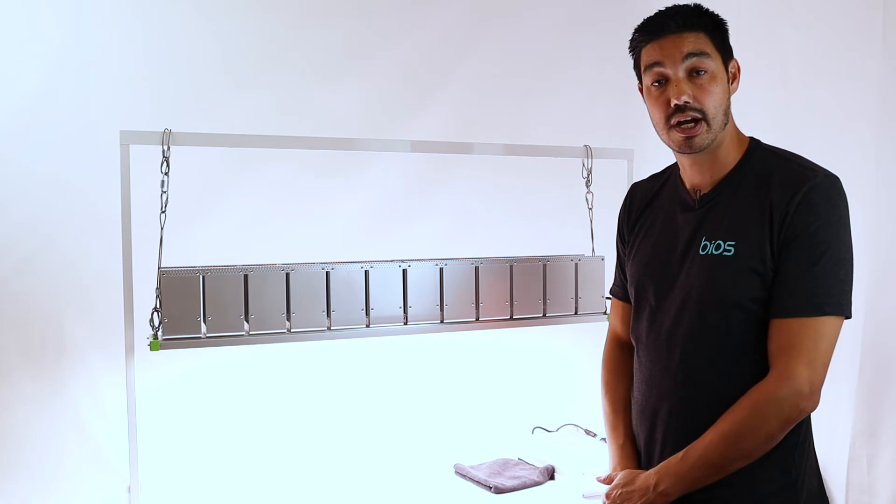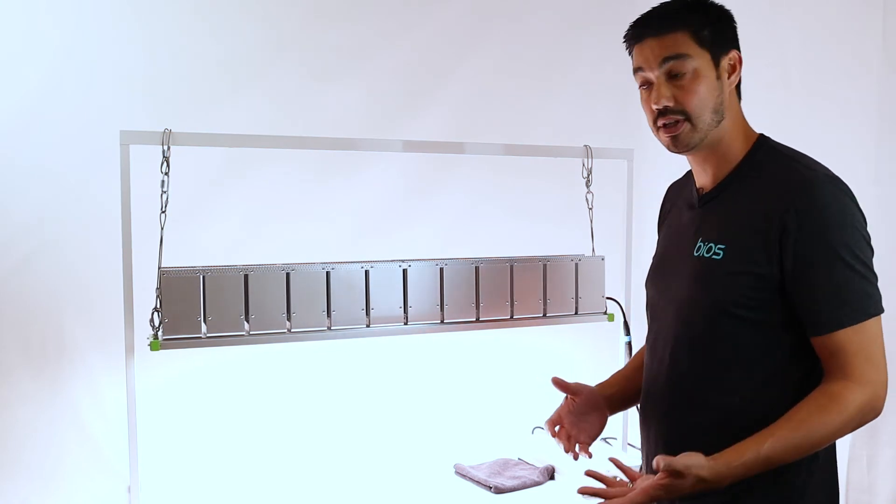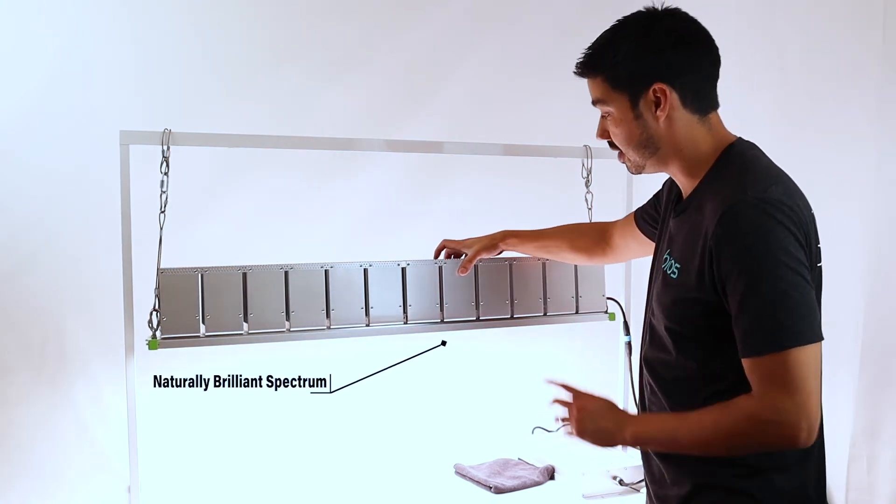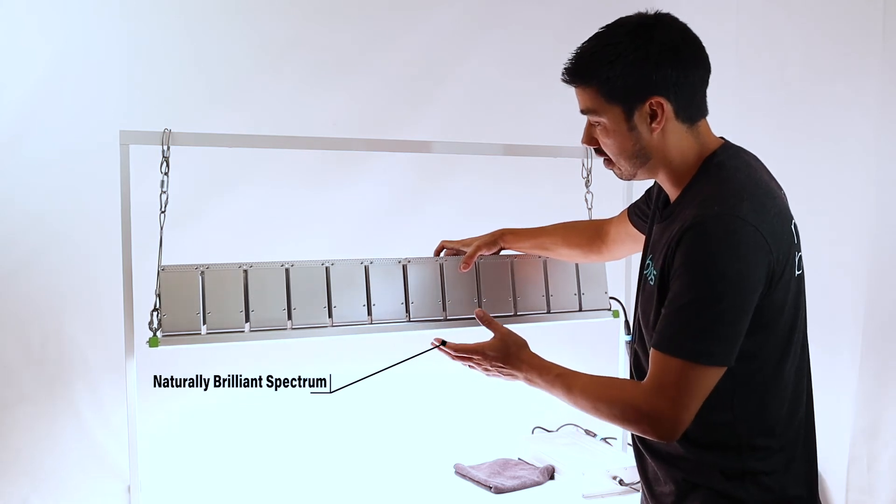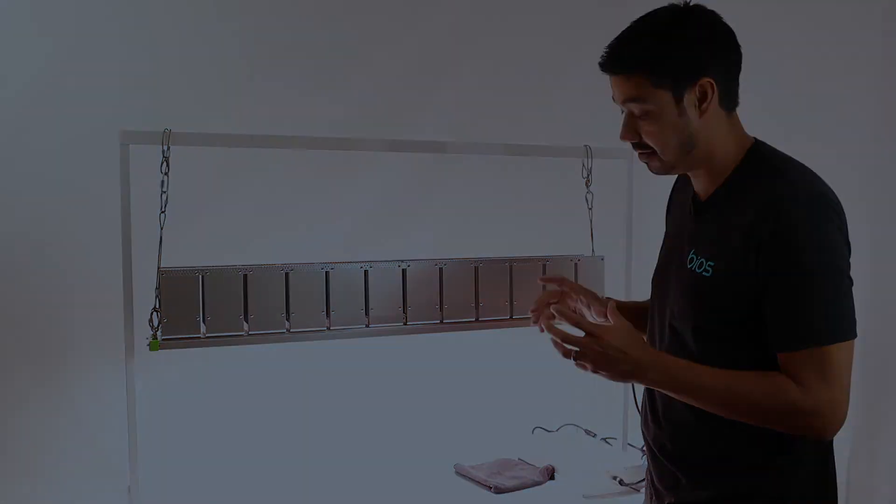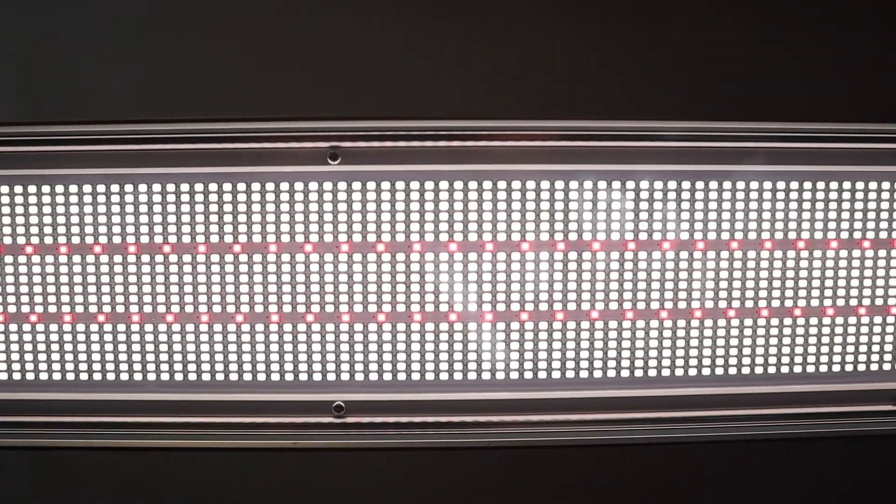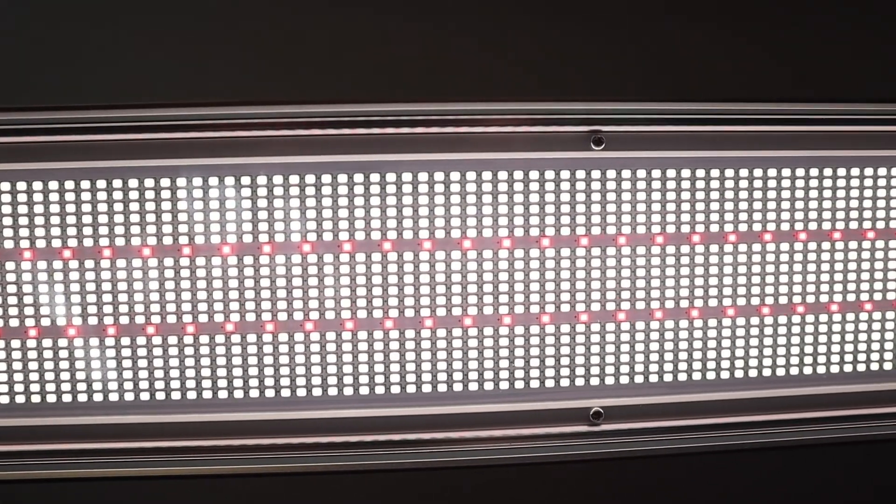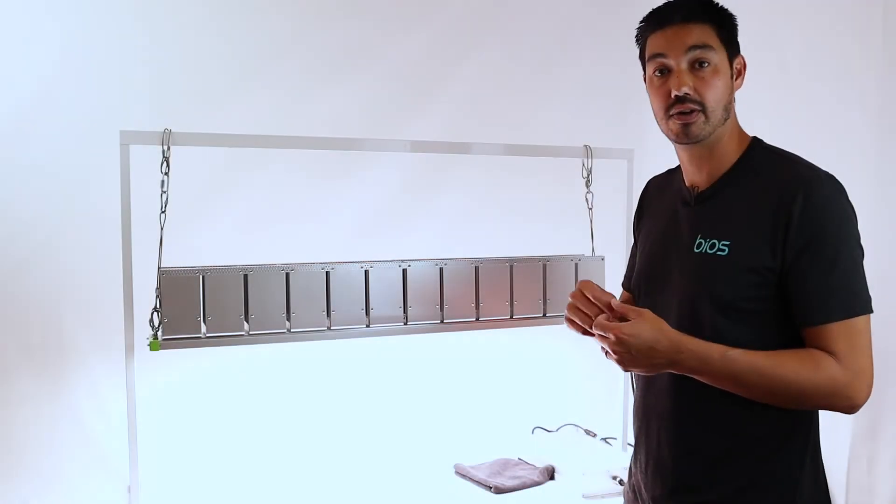Finally, the spectrum. BIOS lighting incorporates specific LEDs. This array includes high-efficiency red LEDs that promote photosynthetic efficiency, blended with white LEDs utilized in architectural lighting for human vision.